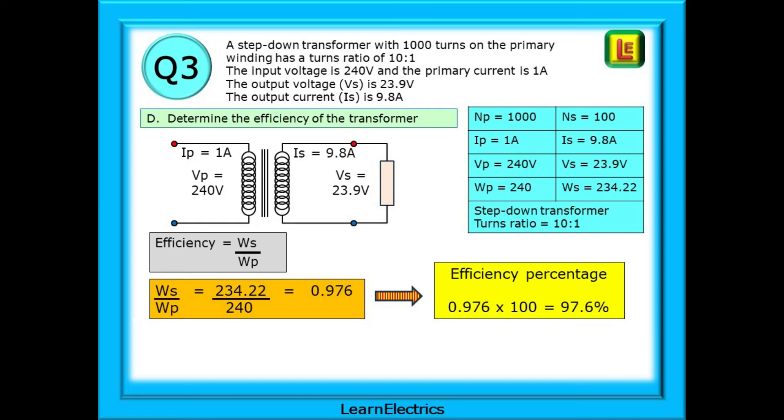Finally, part D. Determine the efficiency of the transformer. All transformers will lose a small amount of energy. It's one of the reasons they get warm. So how efficient is this one? Efficiency is calculated by WS divided by WP, secondary wattage divided by primary wattage. This is 234.22 divided by 240 and gives us an answer of 0.976.